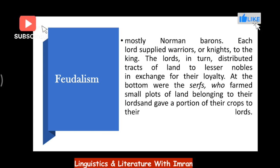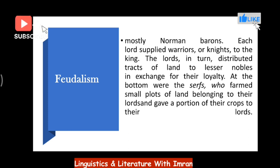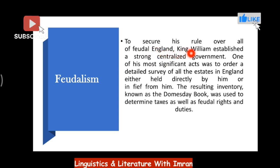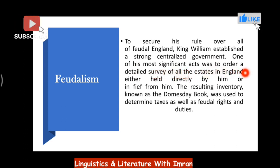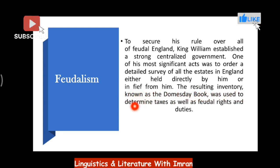At the top was the king, then the noblemen, then the knights, then the lesser nobles, and finally the serfs — the farmers. This feudal system was brought to England by the Normans from France. To secure his rule over feudal England, King William established a strong centralized government. One of his most significant acts was ordering a detailed survey of all the estates in England, resulting in the inventory known as the Domesday Book, used to determine taxes and feudal rights and duties.